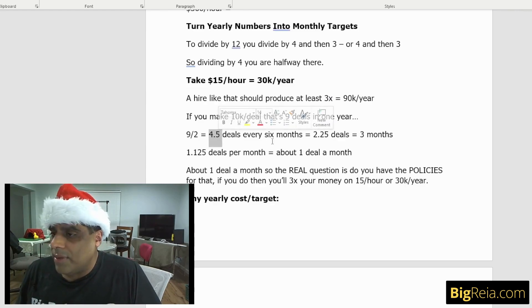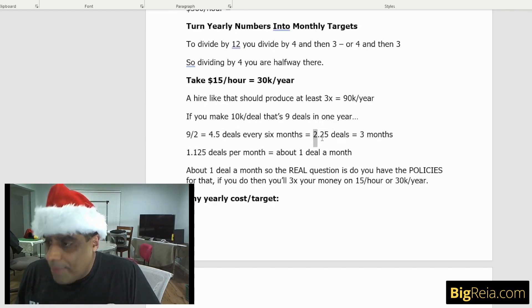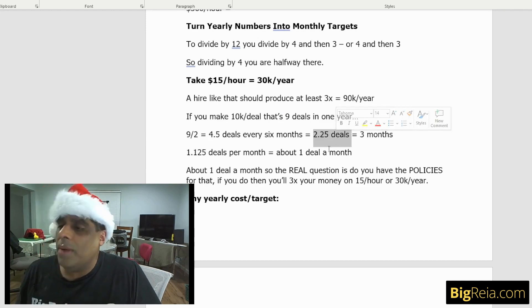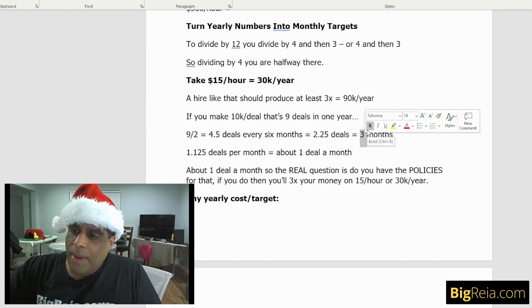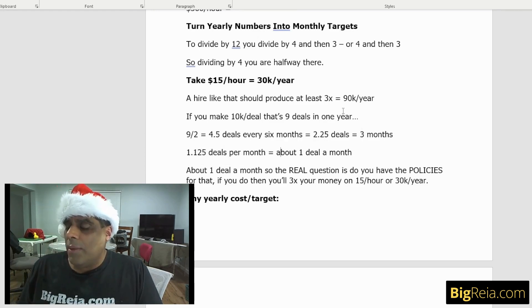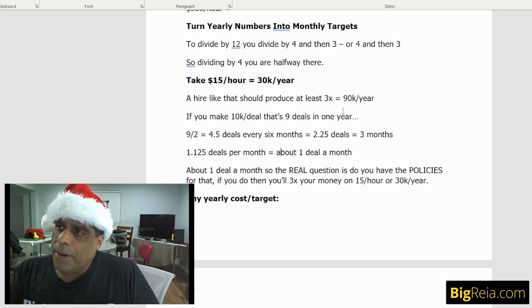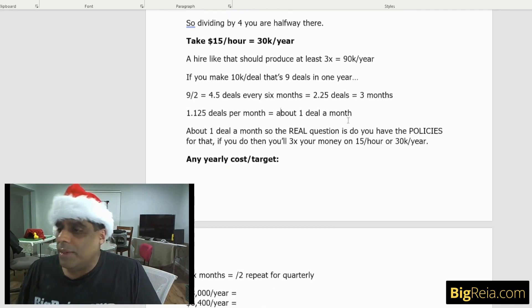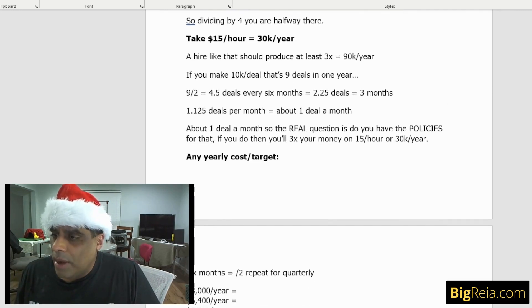What's nine divided by two? Four and a half deals, about four and a half deals every six months. Now we take that, divide that by two, 2.25 deals every three months. So all we're doing is cutting it in half by half, which is basically about a deal a month. That's what you need, about one deal a month. So this is how we quickly figure out how much somebody is costing us, how much money we need to make per deal.